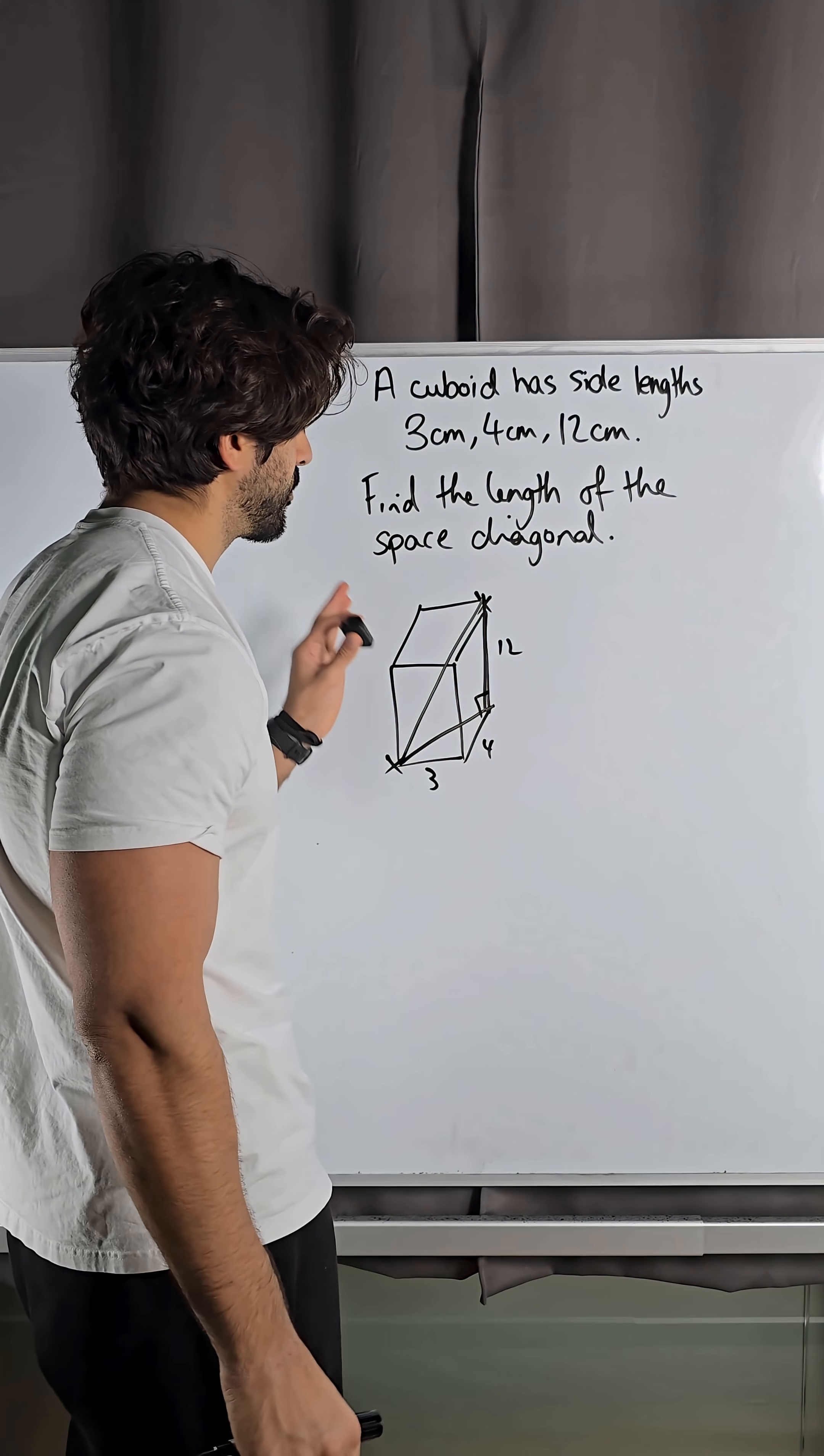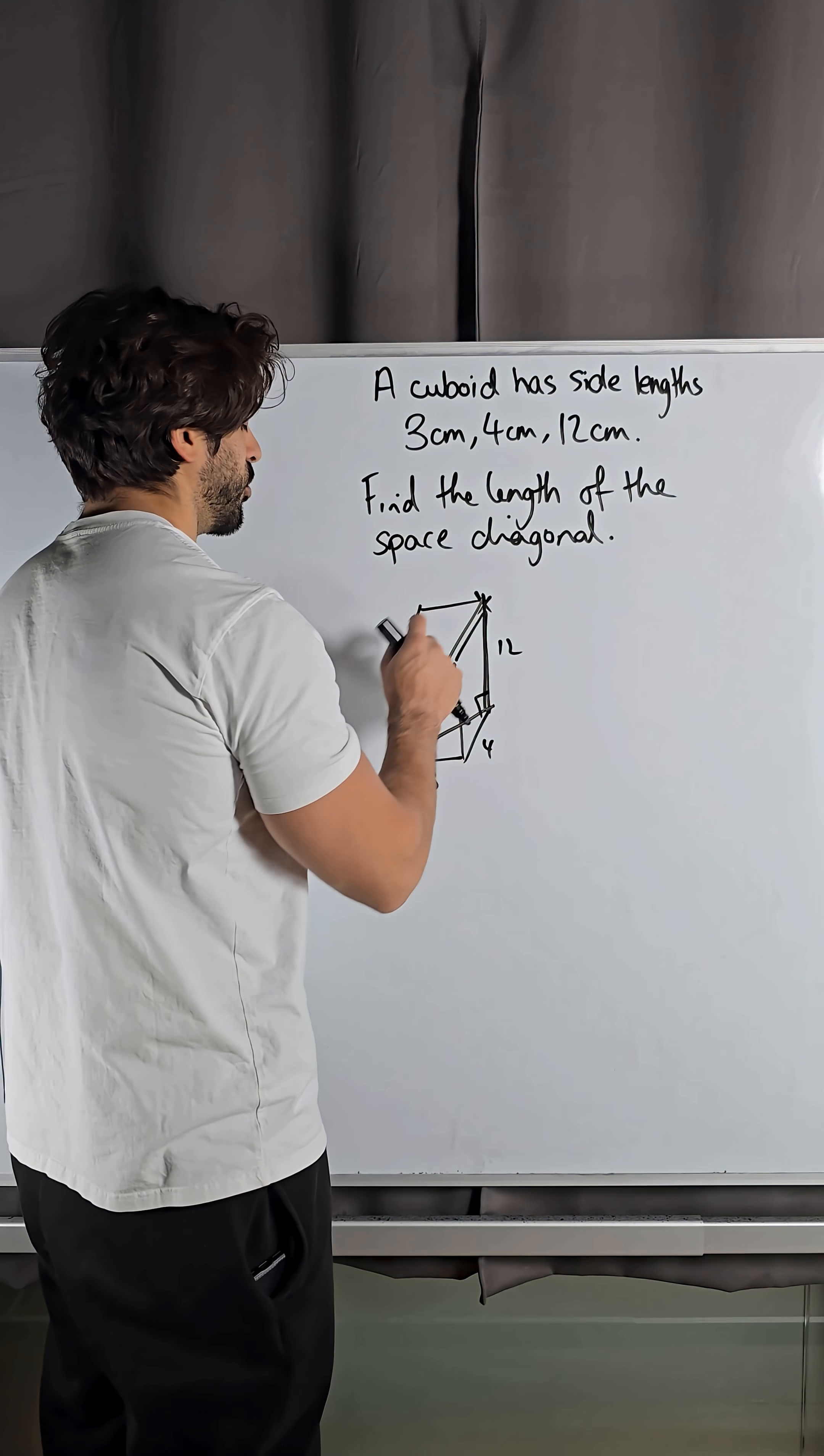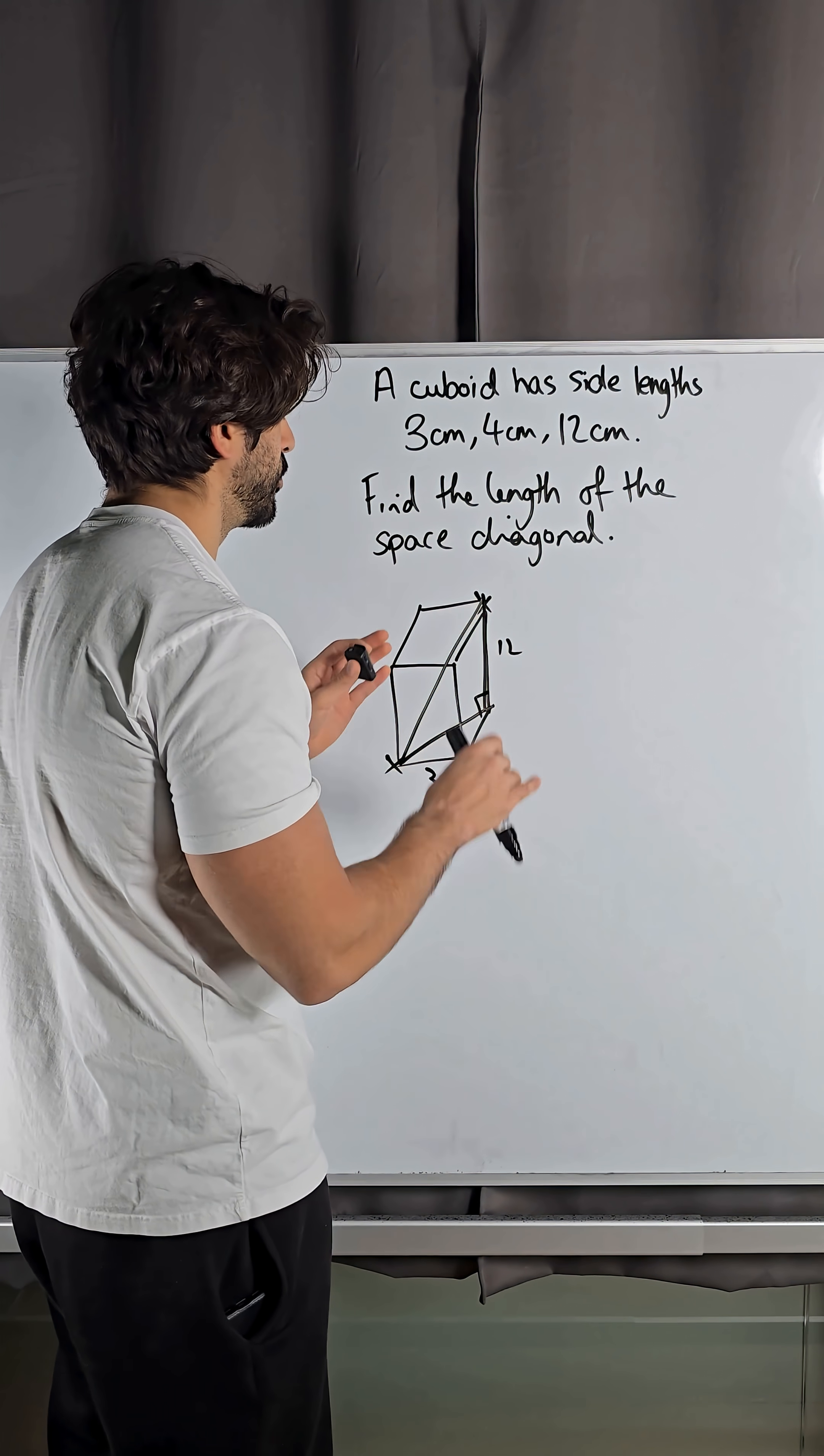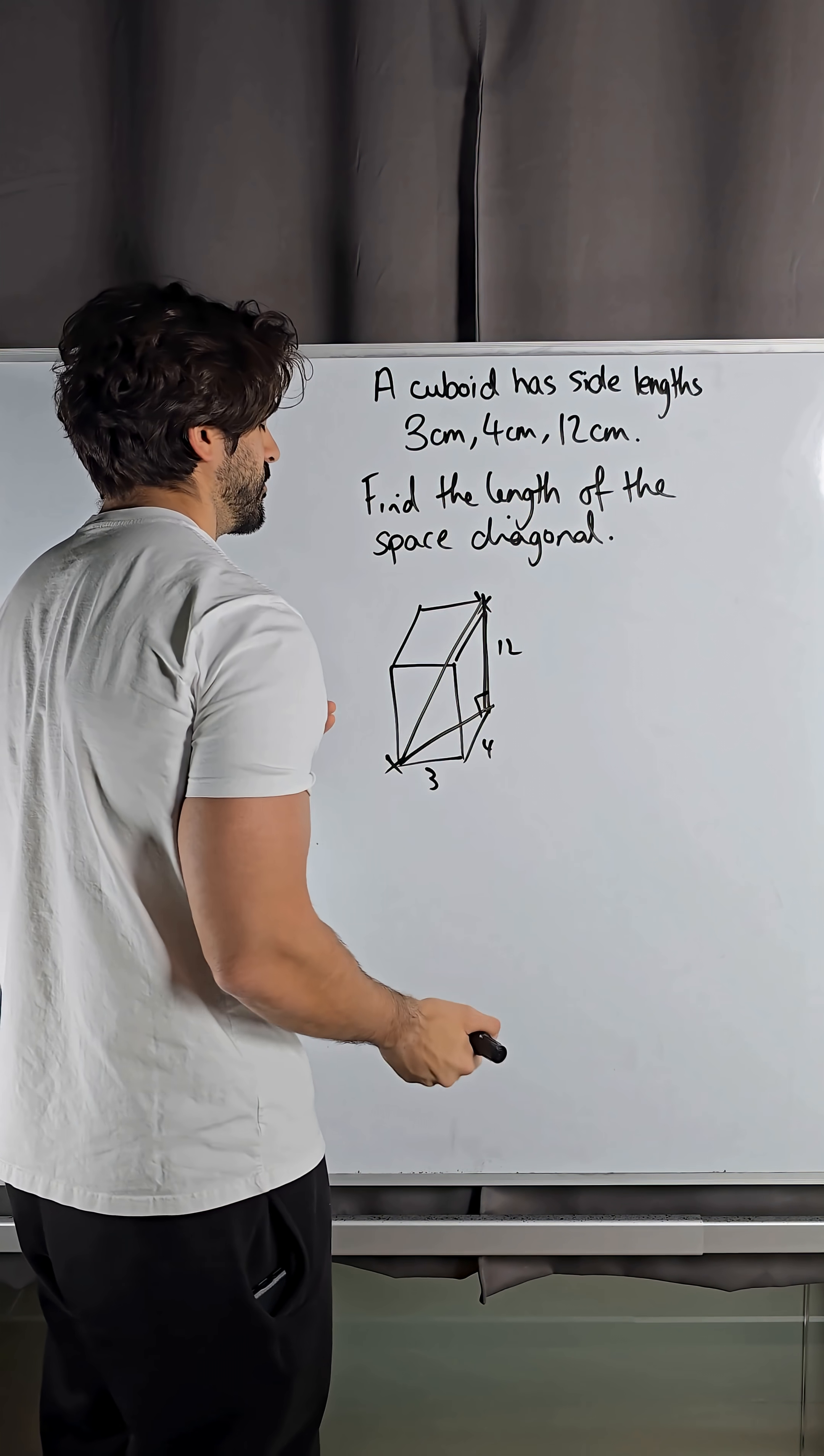So because it's just Pythagoras in 3D, to find corner to corner on cuboids and cubes, all you do is Pythagoras to each of these values.